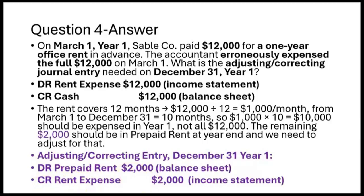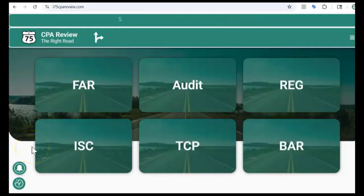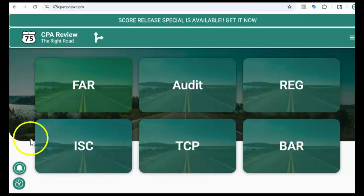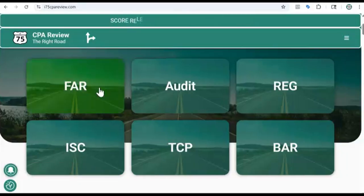If you think you know, leave it for me in the comments or community section. This SIM on adjusting and correcting entries is right out of the I-75 FAR course. If you found this video helpful and want to see the end of it — we only did questions 1 through 4, there are 6 more questions, 5 through 10 — go to I-75CPAreview.com and get yourself on the right road to passing FAR. Get on I-75 with me, Darius Clark, because the right teacher makes all the difference. I'll leave a link in the description.